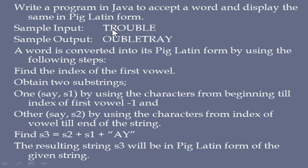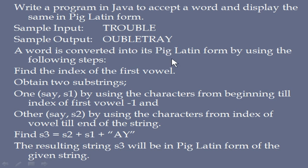Another variable S2, using the characters from the index of the vowel till the end of the string. So from O till the end of the string, which will be stored in S2. So S1 is TR and S2 is OUBLE. Then find S3 equal to S2 plus S1 plus AY. The Pig Latin form is achieved by starting from the vowel, adding the previous characters to the end, then adding AY. That is how you get the Pig Latin form.